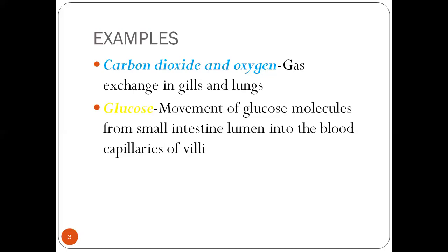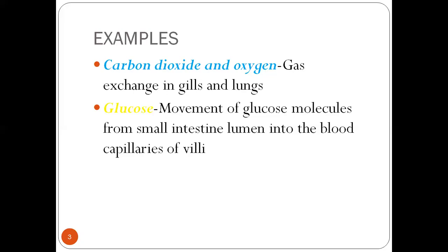So in the small intestine, there is more glucose concentration than in the blood. Glucose molecules diffuse from small intestine into the blood capillaries of villi in the small intestine. Then, when we talk about facilitated diffusion.